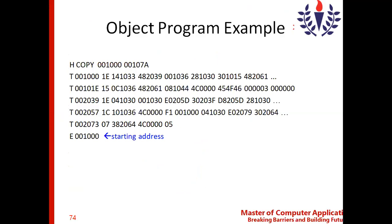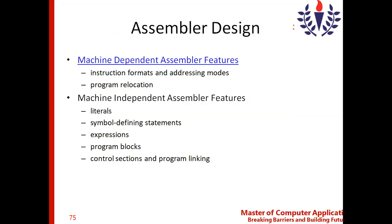For the third, fourth, and fifth text records, the length varies depending on how many object codes are kept inside each text record. Moving to the next topic: machine-dependent assembler features. There are two features that depend on the machine — one is instruction format and addressing mode, and the other is program relocation.